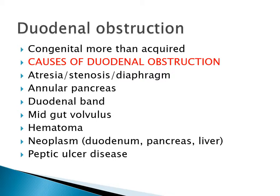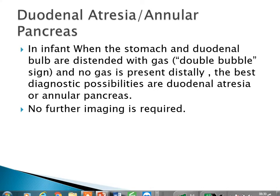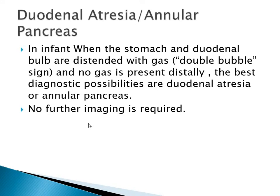Duodenal obstruction: congenital causes are more common than acquired. Causes are atresia, stenosis, annular pancreas, duodenal band, midgut volvulus, hematoma, neoplasm, and peptic ulcer disease. In duodenal atresia or annular pancreas, when the stomach and duodenal bulb are distended with gas - the double bubble sign - and no gas is present distally, the best diagnostic possibilities are duodenal atresia or annular pancreas, and no further imaging is required.